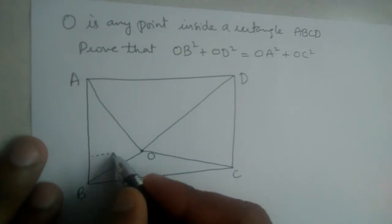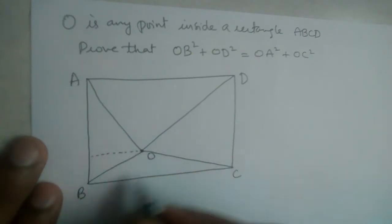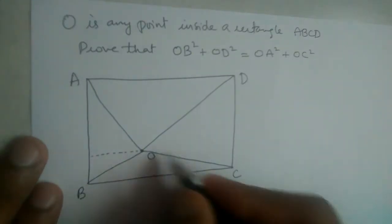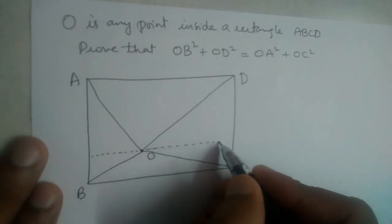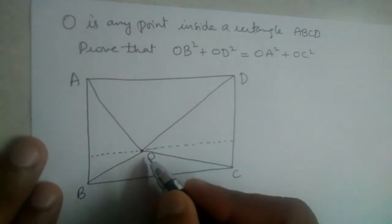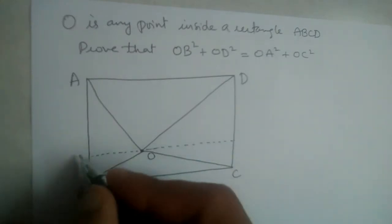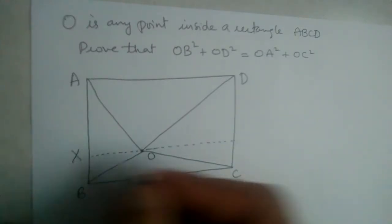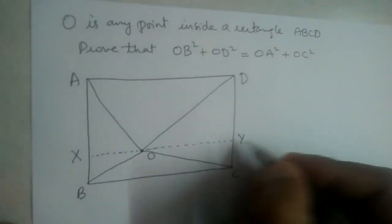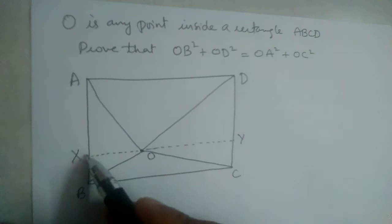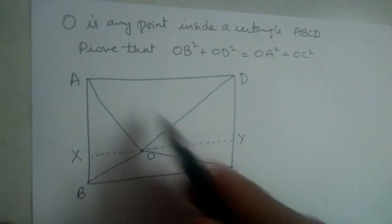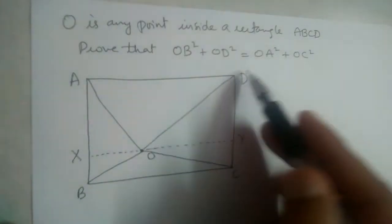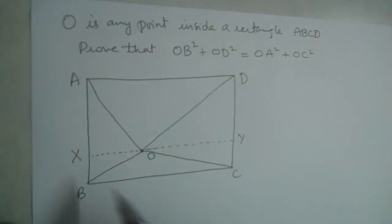What we will do here is draw a line parallel to BC through point O, and let it be XY. So XY will be parallel to BC, and it will also be parallel to AD, because this is a rectangle.